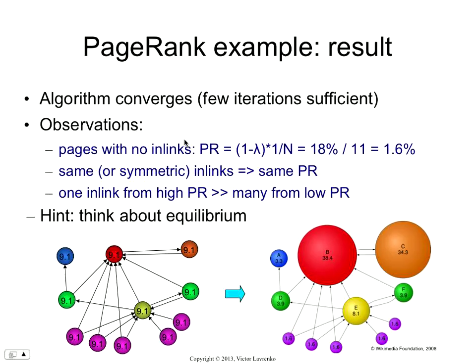You can make some pretty simple observations. For example, for pages that don't have any in-links pointing to them, you know what their final PageRanks are going to be. Because at each iteration, those nodes are not going to get any PageRank from anyone else. The only way to end up in one of those nodes is through a random hop. So they're all going to have a final PageRank of 1 minus lambda — which was 18% — times 1 over n. That works out to 1.6%, so all of those nodes will be at 1.6%.